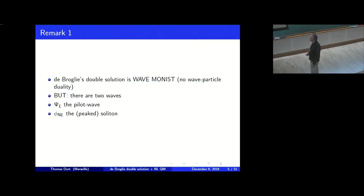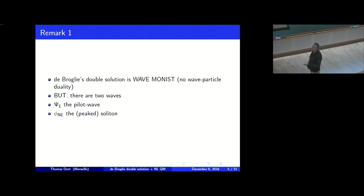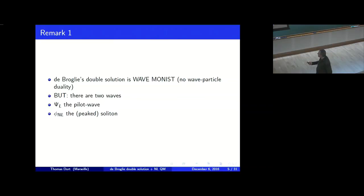In de Broglie's view, there is only one object, which is the wave. Particles are just a special type of wave, so there is no wave-particle duality — there is wave monism. But there are two types of waves: there is the pilot wave, which is not the final description of the reality of the particle, and there is also the peak soliton, which remains localized due to some nonlinearity or eventually due to some singularity. I will develop this idea of the de Broglie double solution, focusing on this peak solitonic solution.